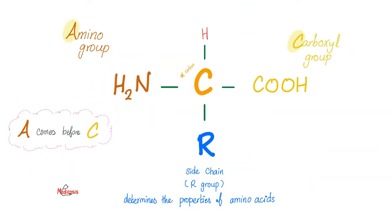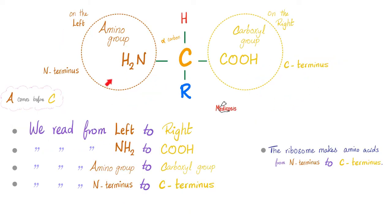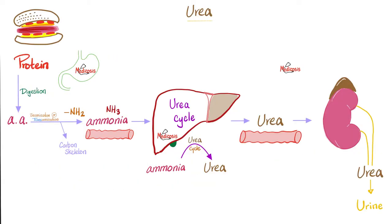Why do we call them amino acids? Because they have an amino group and a carboxylic acid group. The order reflects protein synthesis — the N-terminus is made before the C-terminus. The amino group will give us ammonia. When we digest proteins we get amino acids; we can use the carbon skeleton to make glucose, but the amino terminus yields ammonia. Ammonia goes to the liver, which converts it to urea through the urea cycle. Urea then leaves the liver, goes to the blood, and the kidney excretes it in urine.